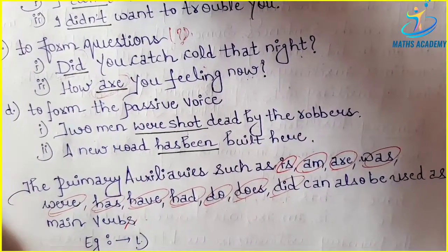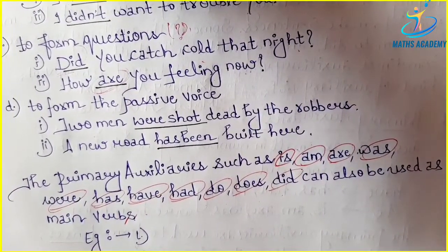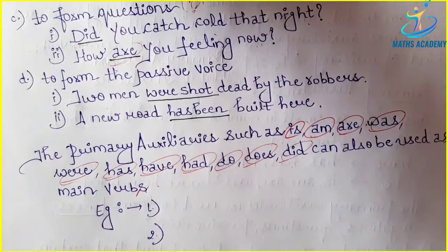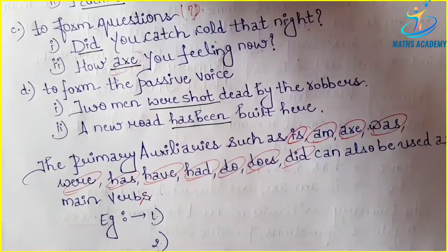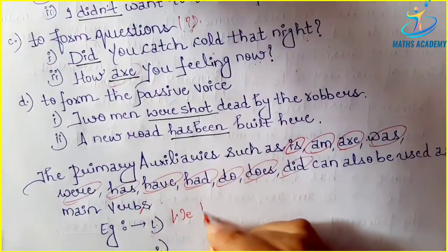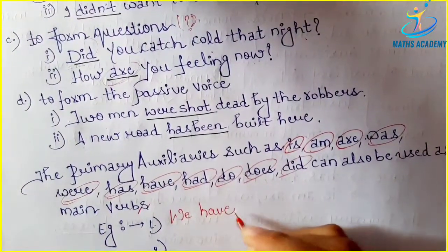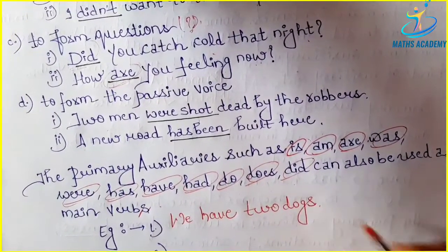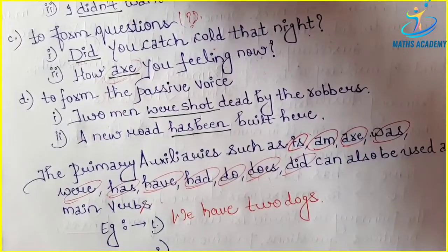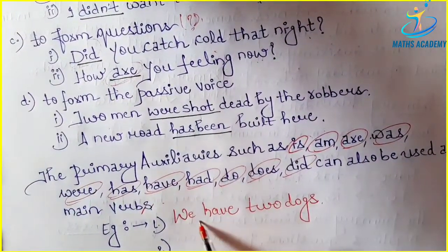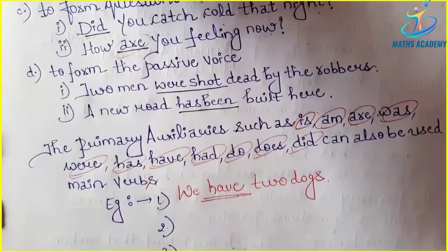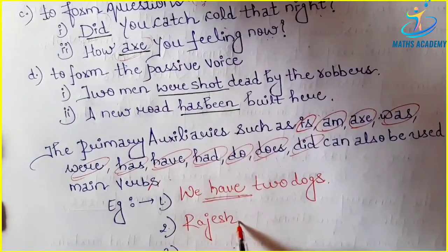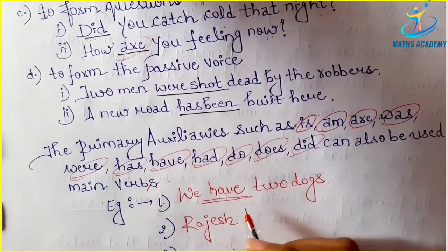So how could we use them as the main verbs? Let's see it with the help of examples. First example: 'We have two dogs.' Here have is the main verb. Second example: 'Rajesh did the sum in two minutes.' Here did is the main verb.